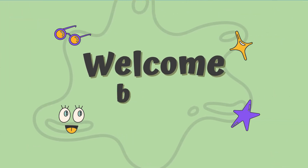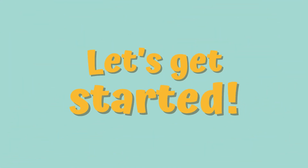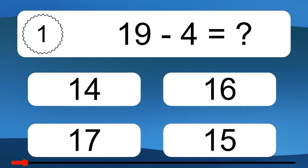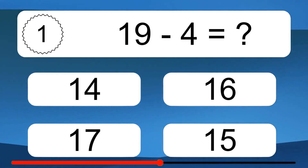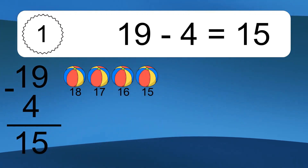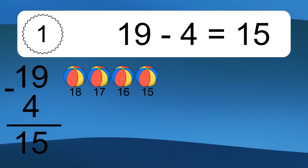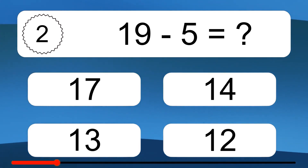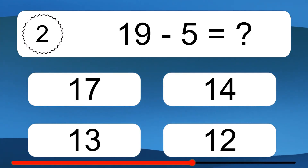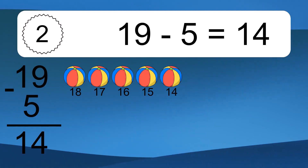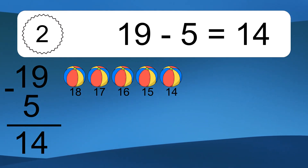Hey, and welcome to a new video! Get ready to tackle fun challenges and test your skills. Let's get started. 19 minus 4 equals what? 19 minus 4 equals 15. Let's count it: 18, 17, 16, 15. 19 minus 5 equals what? 19 minus 5 equals 14. Let's count it: 18, 17, 16, 15, 14.